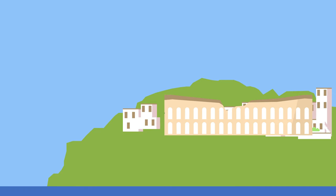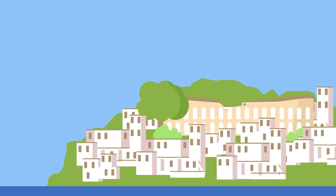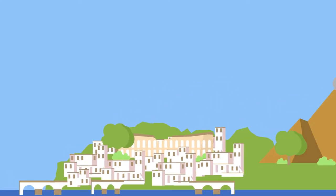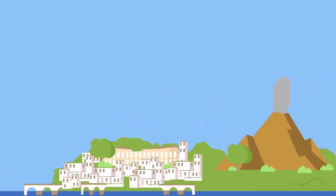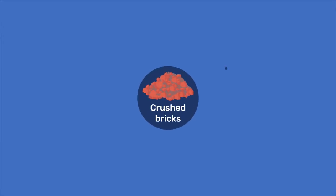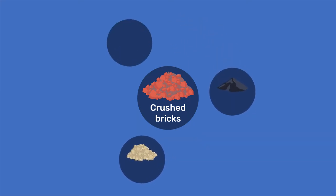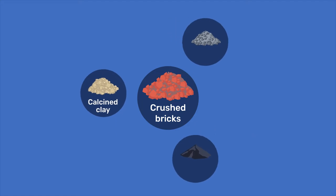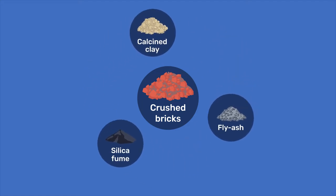The compounds used are referred to as pozzolans, a name derived from the Italian town of Pozzuoli, near which volcanic ash was sourced during the Roman Empire. Apart from such volcanic ash, crushed bricks were also used historically and have since been complemented by other pozzolanic materials as calcined clays, silica fume and fly ash.